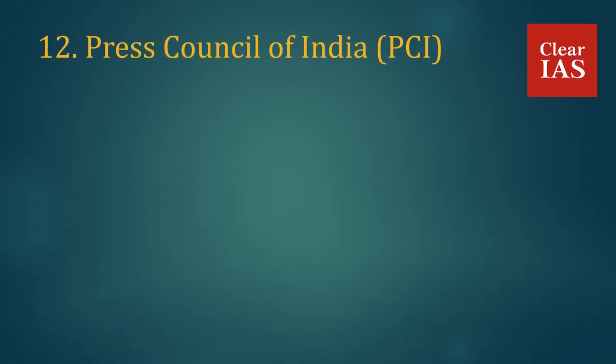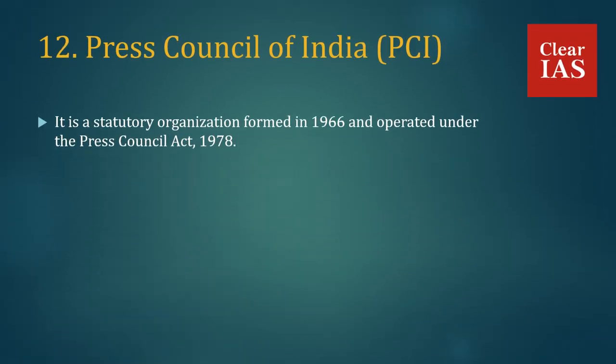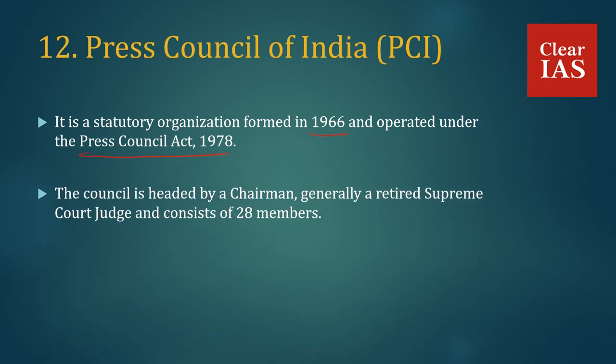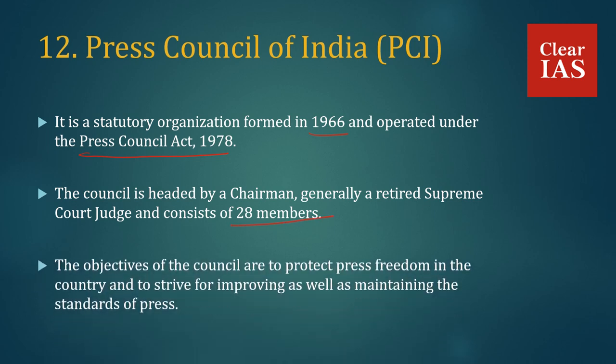Press Council of India. It is a statutory organization formed in 1966 and operates under the Press Council Act of 1978. The Council is headed by a Chairman, generally a retired Supreme Court judge, and consists of 28 members. The objectives of the Council are to protect press freedom in the country and to strive for improving as well as maintaining the standards of the press.